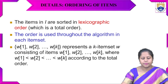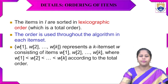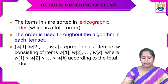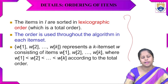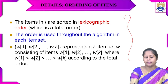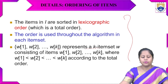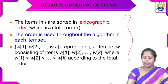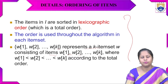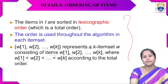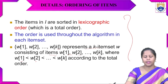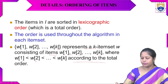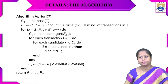Items in the algorithm are sorted in lexicographic order, which defines a total order used throughout the algorithm when searching for each item set. A k-item set w is represented as w1, w2, …, wk — consisting of items w1 through wk — where w1 < w2 < w3 < … < wk according to the total order.